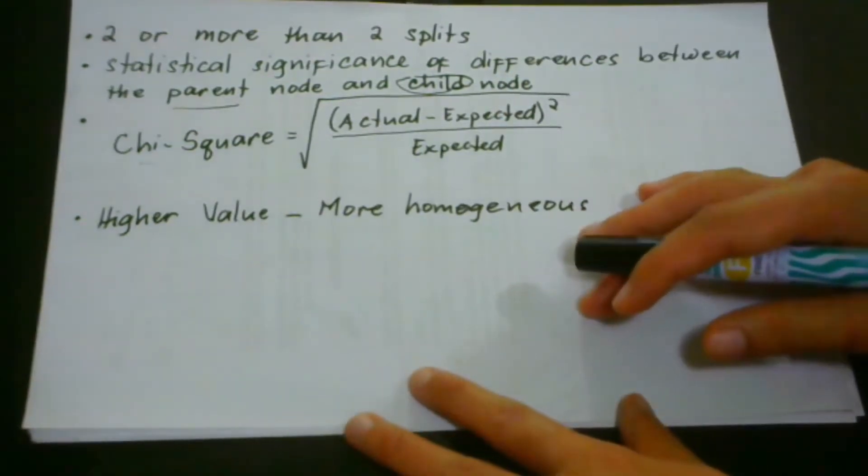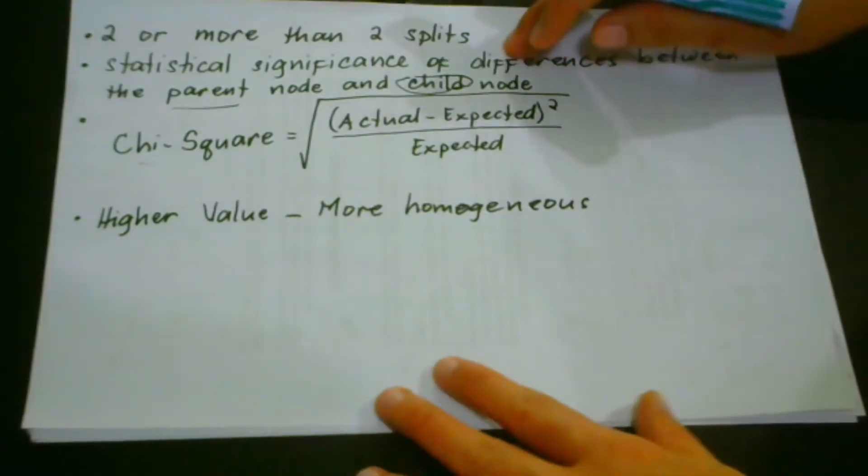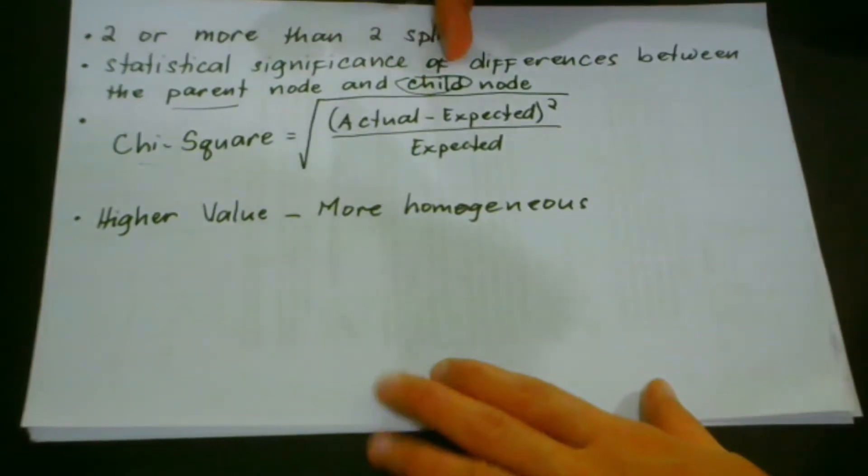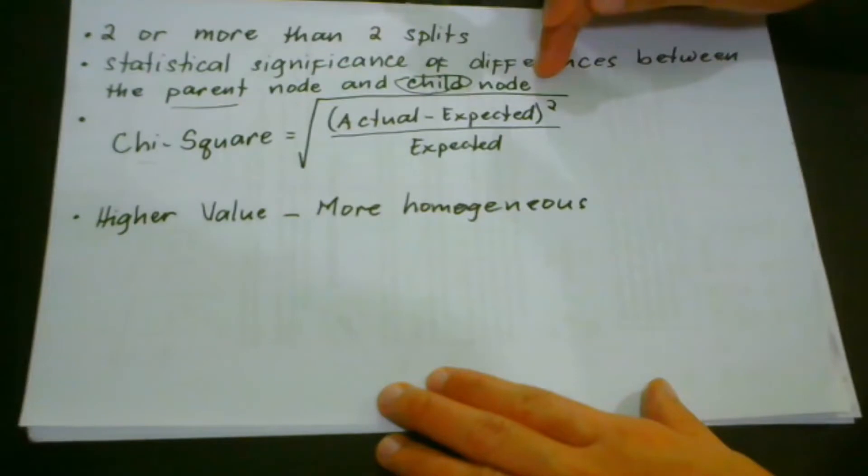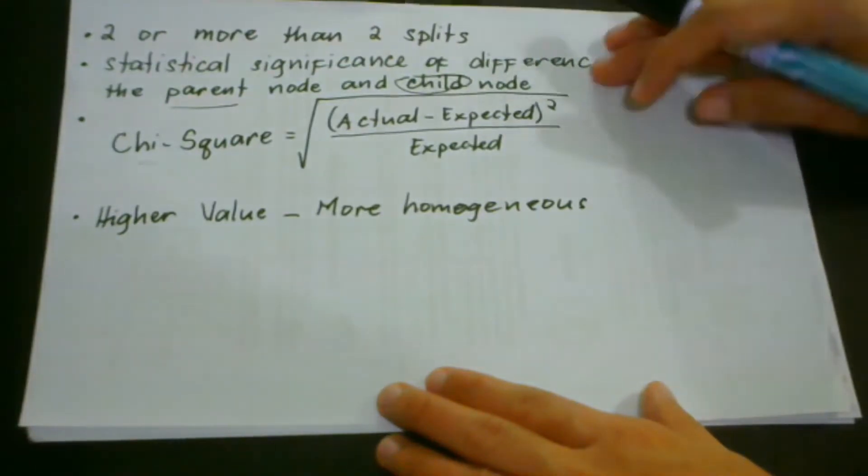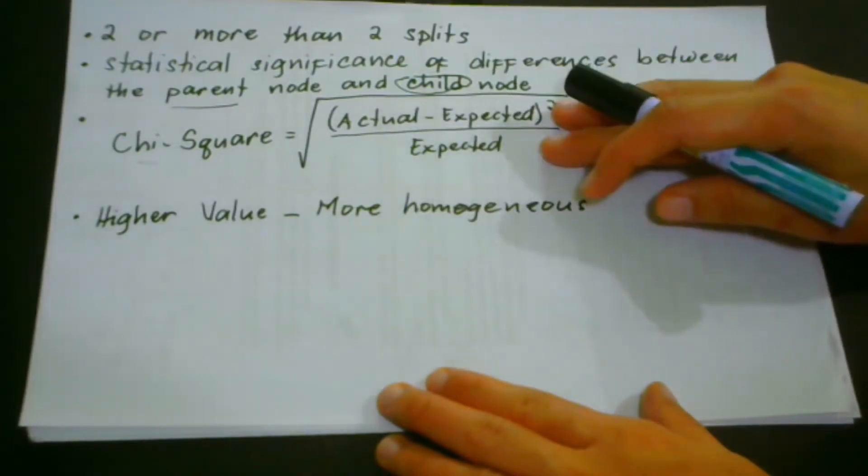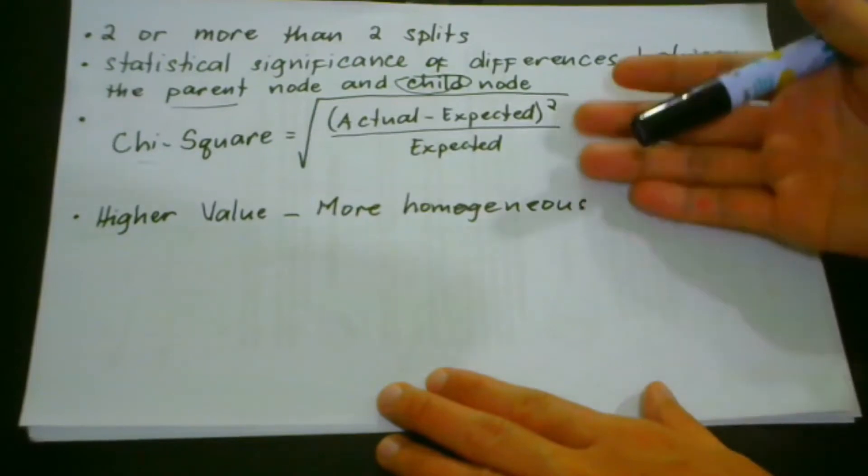I believe at this point you would want to ask me, how does chi-square work? Chi-square works on the statistical significance of differences between the parent node and the child node. So for us to be able to understand this one properly, we're going to understand the value of chi-square. How do we calculate the value of chi-square?